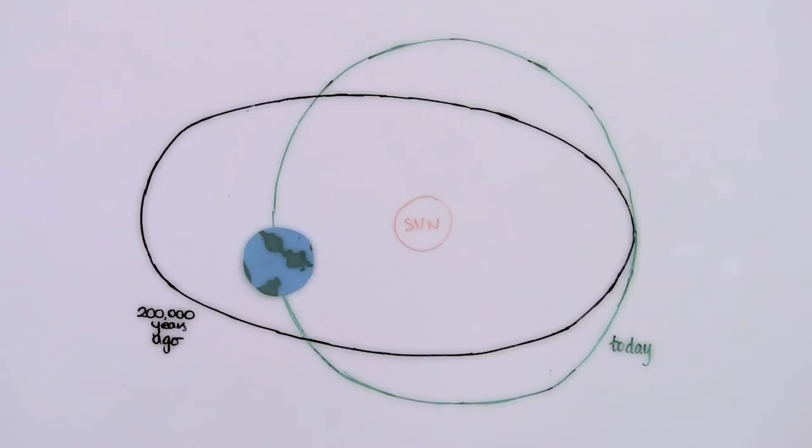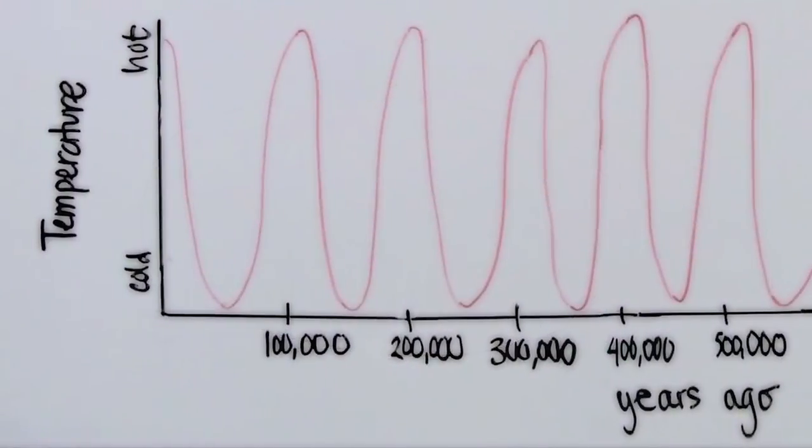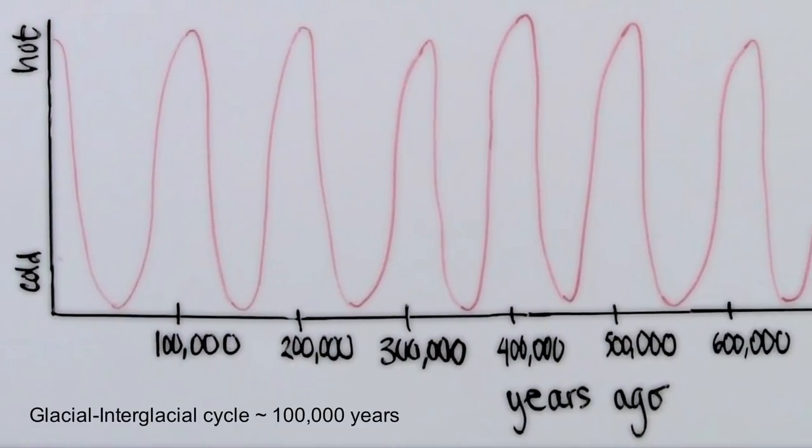Temperature records obtained from ice cores tell us that Earth's temperature has varied from cool to warm periods on 100,000 year cycles. These are known as glacial and interglacial cycles.